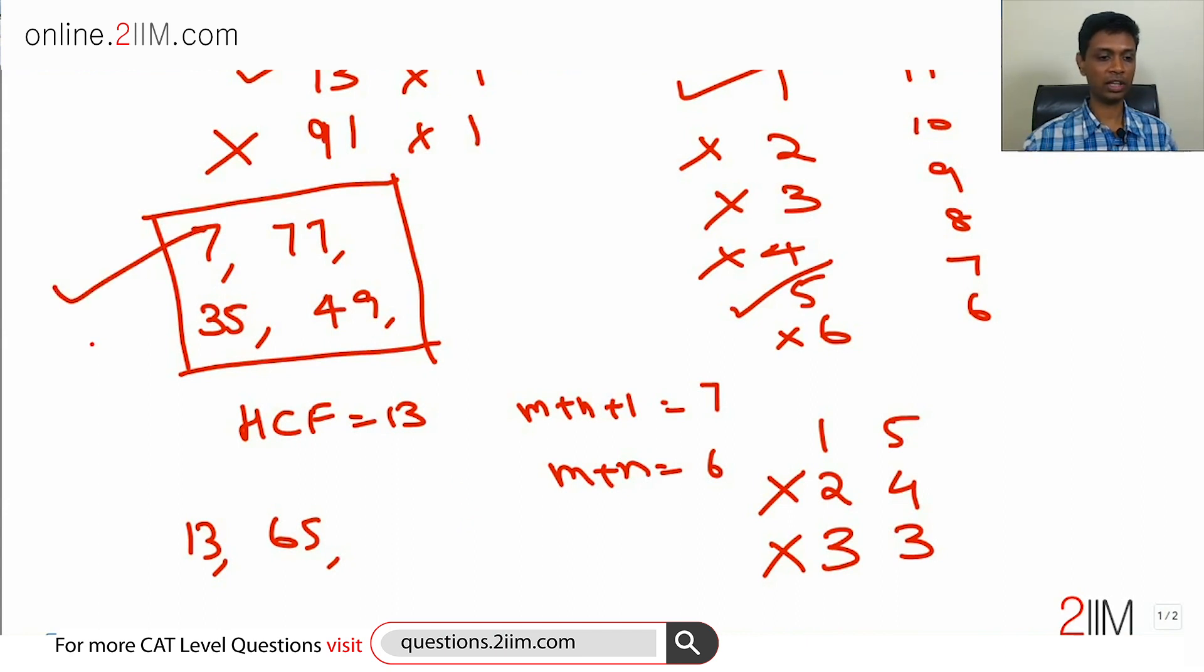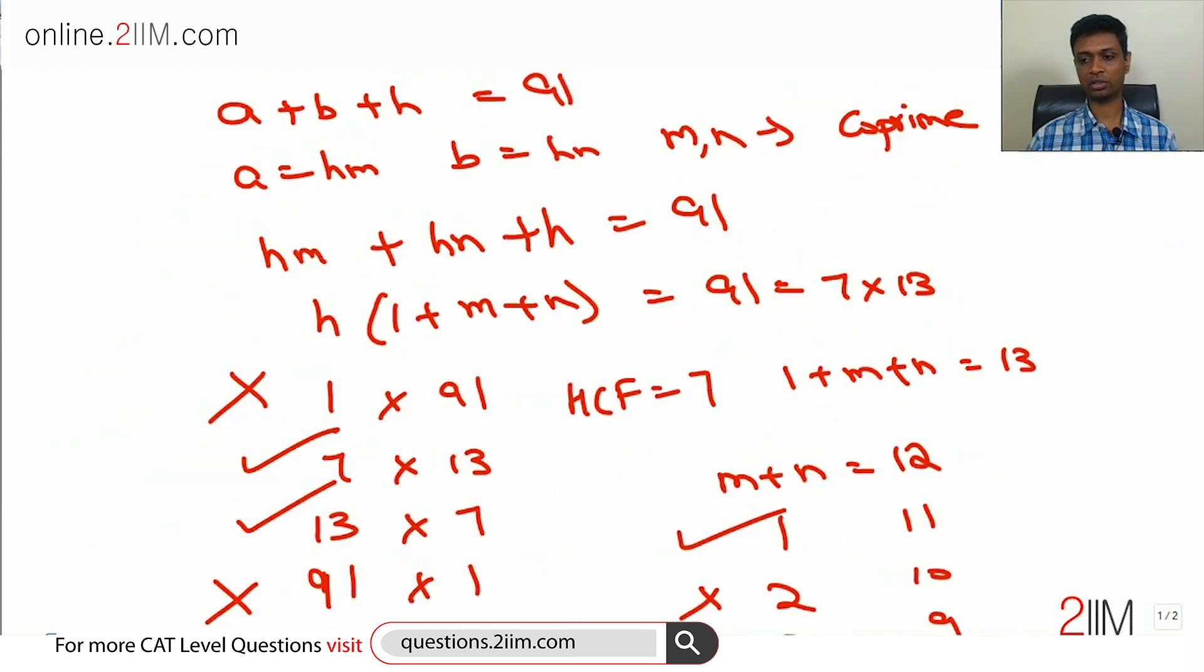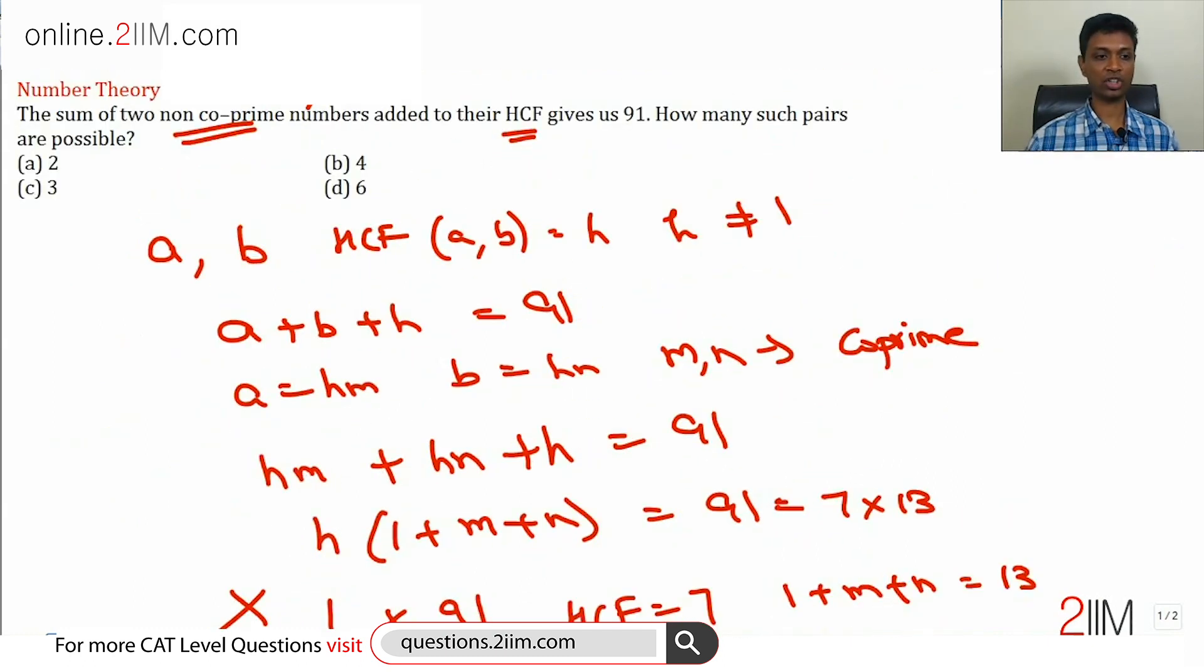So there is one possibility like this, two with HCF equal to 7 and one with HCF equal to 13. So there are three different possibilities that will satisfy this condition. We will see what the answer choices are and just mark it now. How many such pairs are possible? Three such pairs are possible.